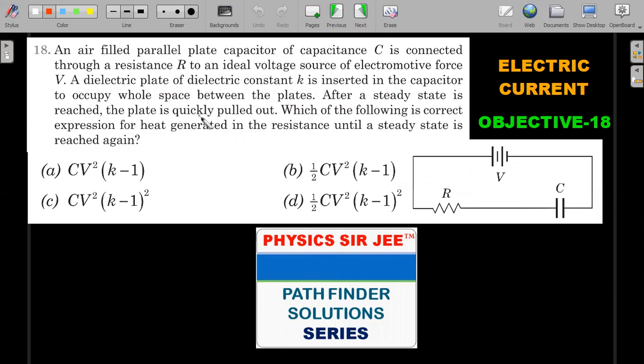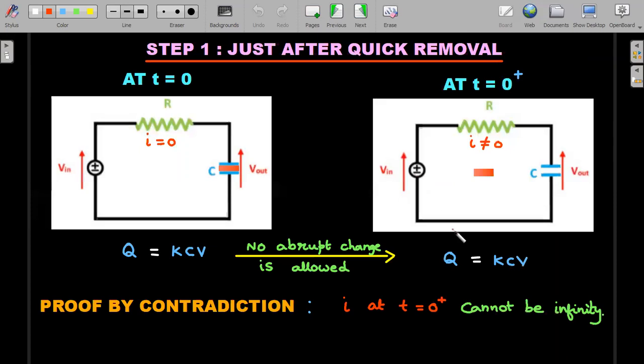After the steady state is reached, the plate is quickly pulled out. Which of the following is the correct expression for the heat generated in the resistance until a steady state is reached again after pulling it out? Four options are given, you are supposed to choose one of the following.